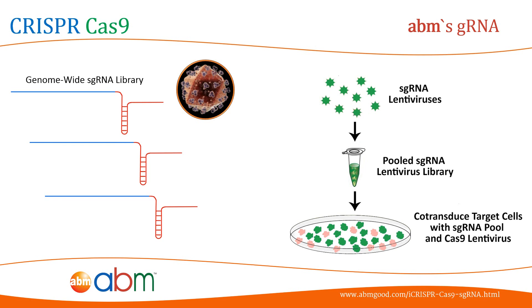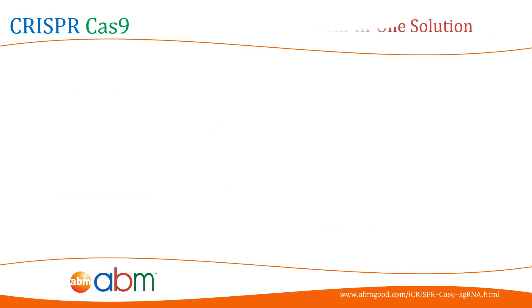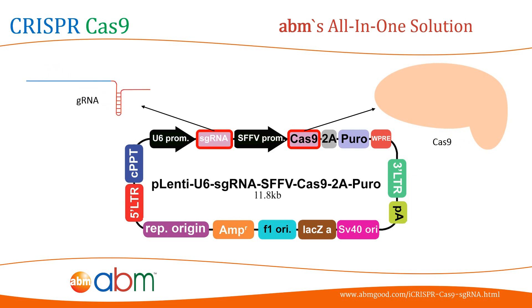Similarly, our iCRISPR sgRNA adenoviruses and AAVs are useful for non-integrating, highly efficient genome editing in hard-to-transduce target cells. Although Cas9 and gRNA can be expressed from separate plasmids or viruses, researchers also have the option to use a single construct that expresses both Cas9 and gRNA. This could be helpful when working with animals or immune cells that are not very susceptible to gene delivery. ABM offers an all-in-one system with dual expression of Cas9 and gRNA in a single lentivector cassette or lentivirus.